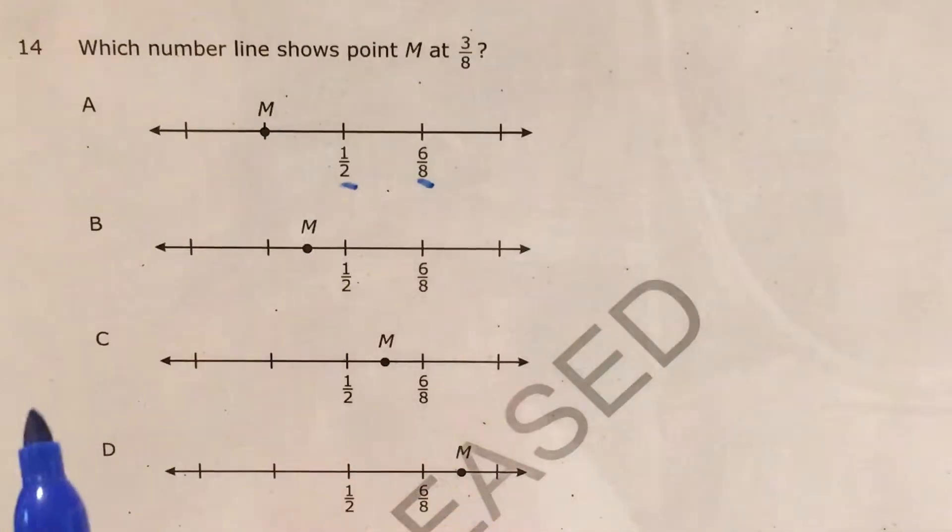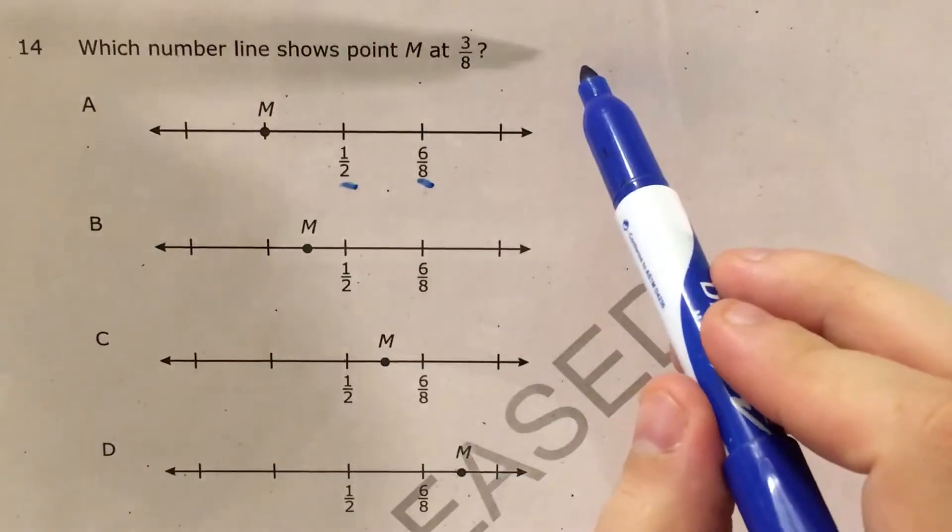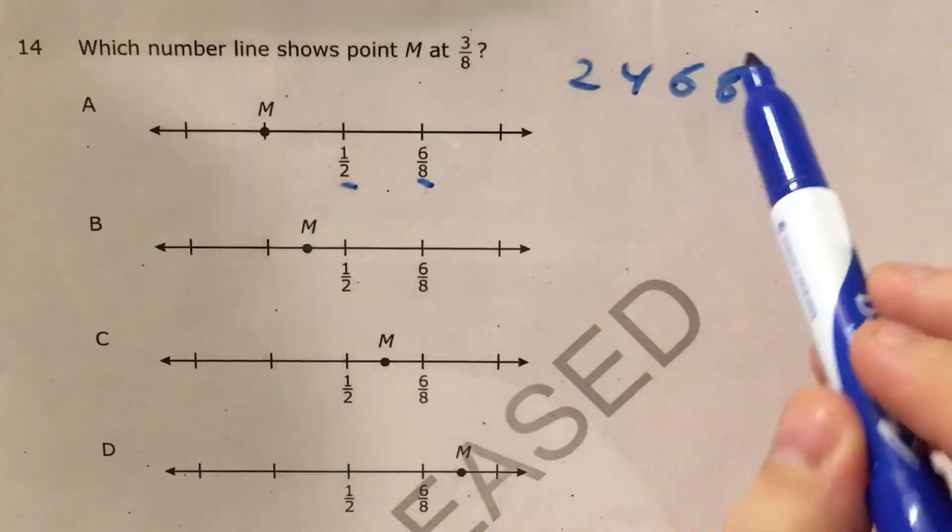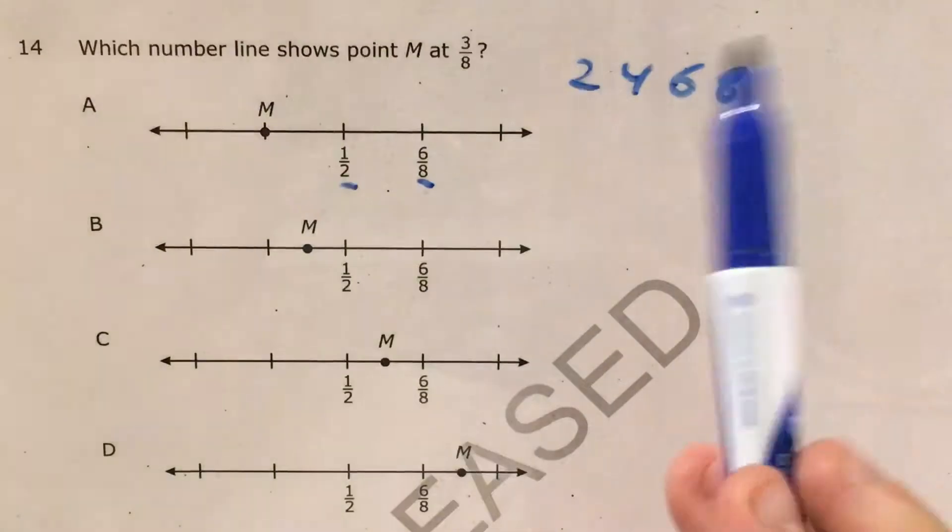So my biggest question is how many times does two go into eight? Well, if you know your times tables, or you can skip count and say two, four, six, eight. That's how many twos? One, two, three, four twos.